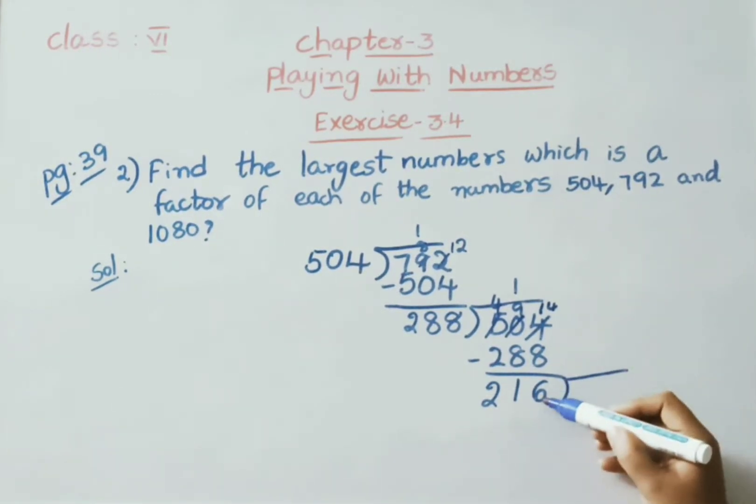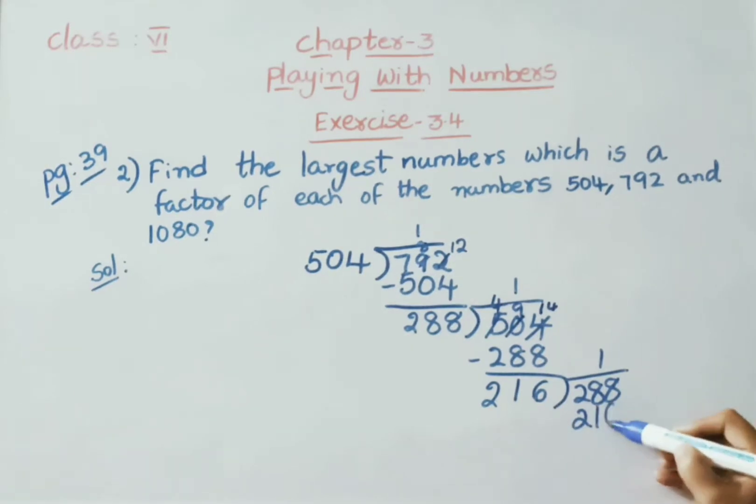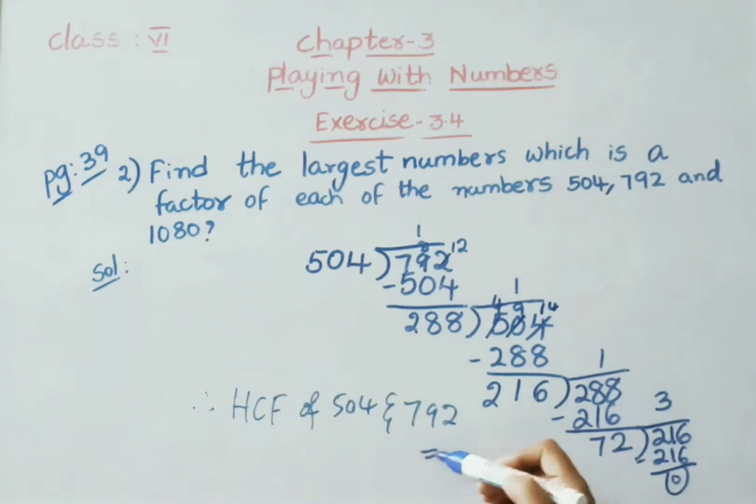So 216 we got it. Now from this 216, you divide previous divisor 288. 216 ones are 216. Subtract: 8 minus 6 is 2, 8 minus 1 is 7, 2 minus 2 is 0. With this 72, we get a remainder 0.